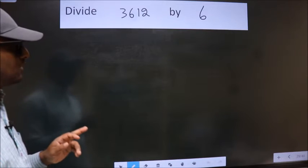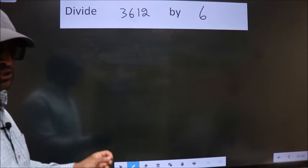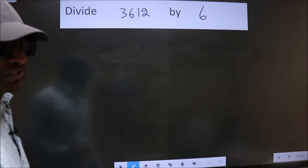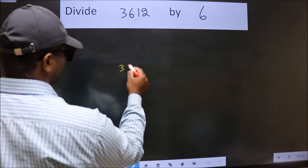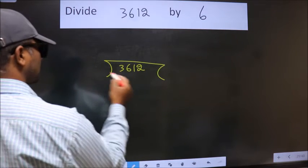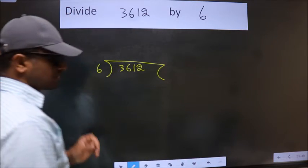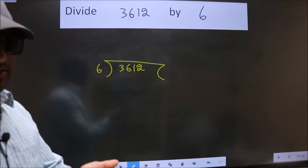Divide 3612 by 6. To do this division, we should frame it in this way: 3612 here, 6 here. This is your step 1.